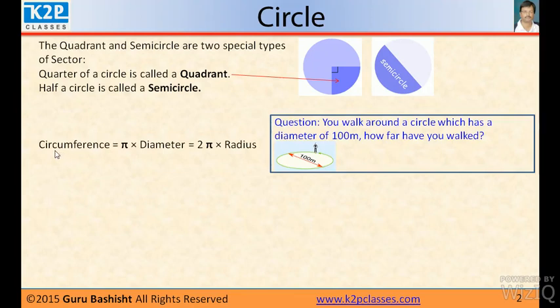We know that circumference by diameter is pi, so we can say circumference equal to pi into diameter. And diameter is two into radius. Circumference is 2 pi r, two pi radius.